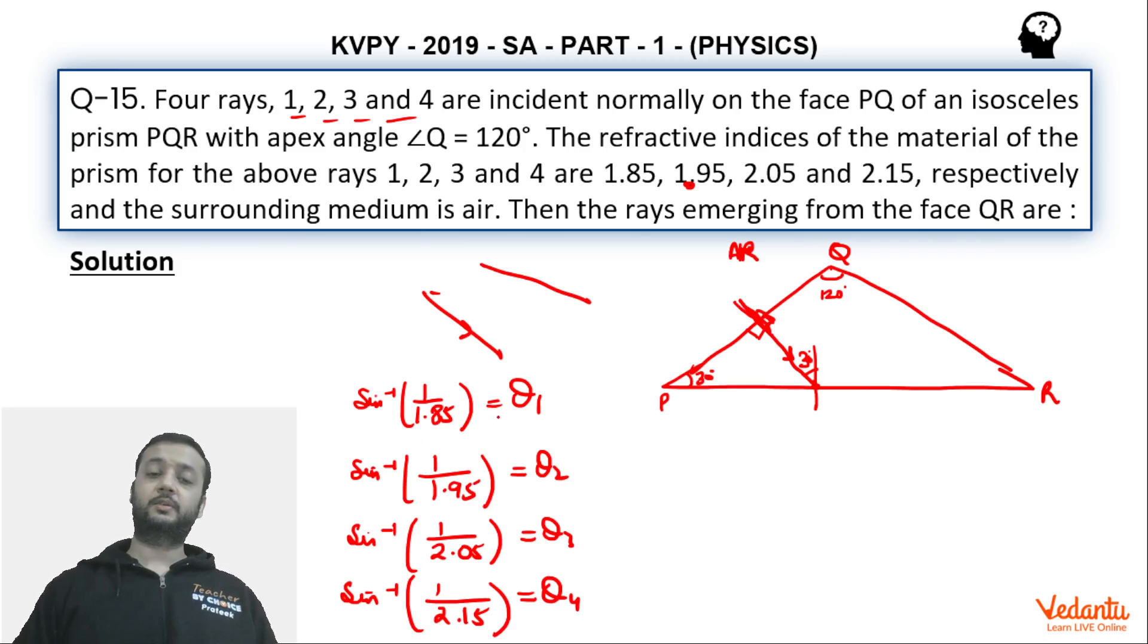So critical angle of first and second ray, you can see, critical sine inverse 30 degrees kitna hota hai? Sine inverse half. So definitely theta 1 and theta 2 are greater than 30. Therefore theta 3 and theta 4, so these are less than 30 degrees. So we can say that 3rd and 4th ray ka angle of incidence critical angle se bada ho gaya. Therefore 3rd and 4th ray is going to come reflect.